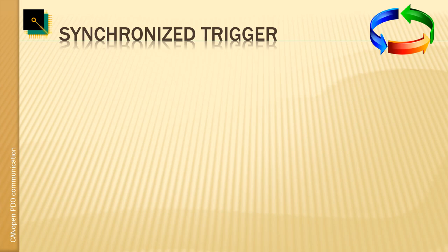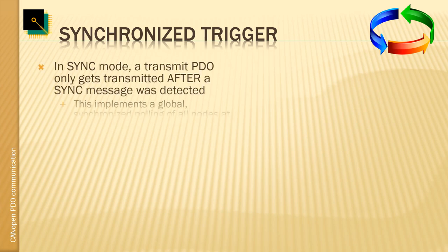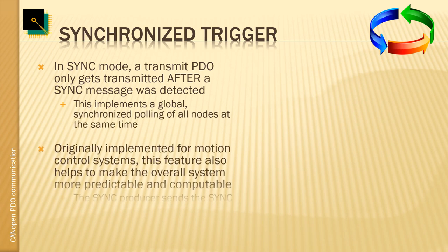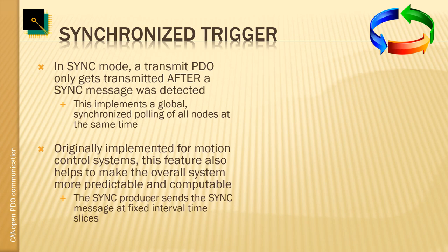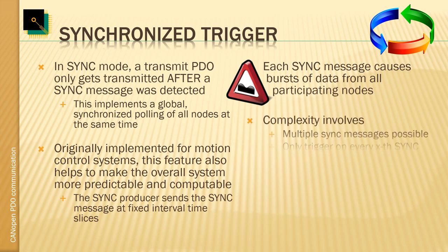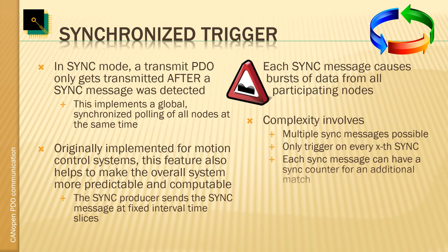The synchronized trigger mode uses one global sync message to tell all the nodes listening to the sync that now is the time to transmit their data or to apply the output data. So really, this is a method to synchronize the inputs and outputs of multiple devices on the network. Our sign of caution here is that each sync message causes a burst of messages going onto the bus, resulting in high bus load with every sync. The complexity level can also get quite high because there could be multiple sync messages each involving a sync counter, and depending on counter values, triggers can react or not.